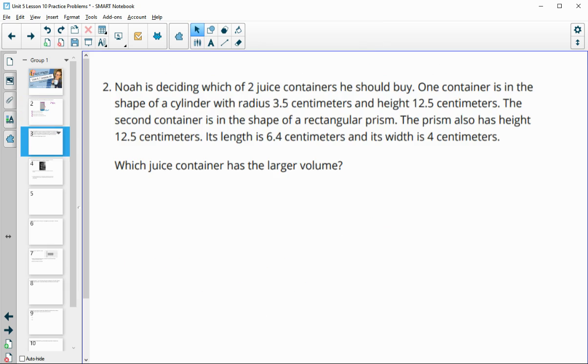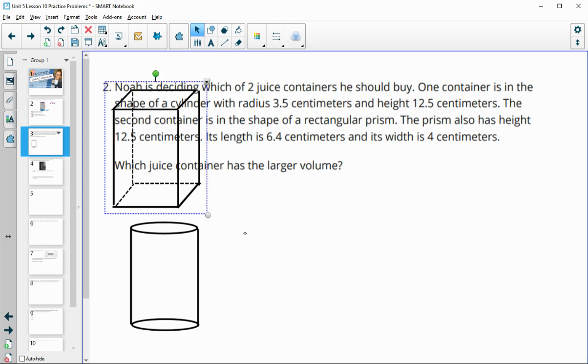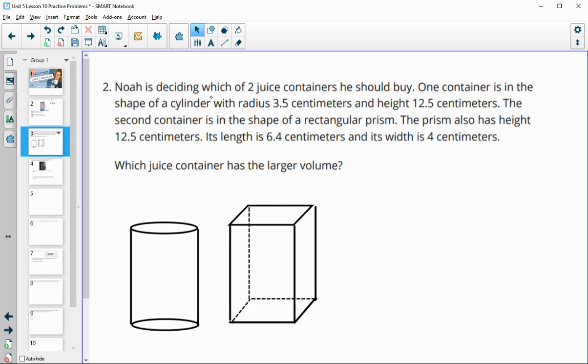Number two, Noah's deciding which of two juice containers he should buy. One container is the shape of a cylinder and the other is the shape of a rectangular prism. The cylinder has a radius of 3.5 centimeters and a height of 12.5 centimeters. The rectangular prism also has a height of 12.5 centimeters. This one has a length of 6.4 and a width of 4.